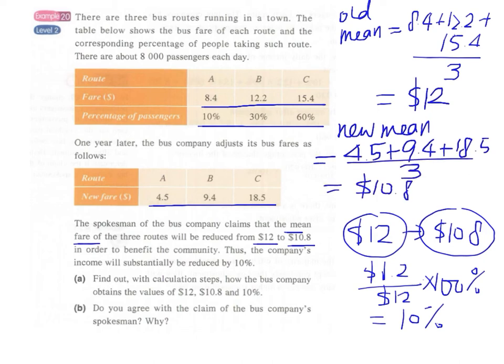But the problem is, is this way of calculating the mean a good way to show the difference? Is this a good way to represent the average of the bus fares?